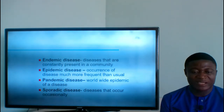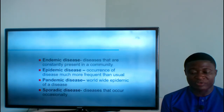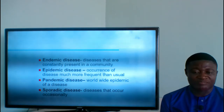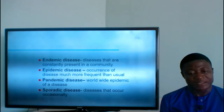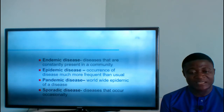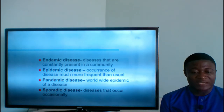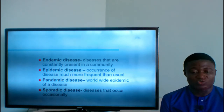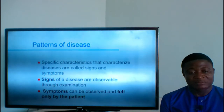Pandemic disease: this refers to the worldwide spread of a disease. A disease that has spread worldwide is what we refer to as a pandemic. The latest example is the coronavirus. Sporadic disease: this is a disease that occurs occasionally, one at a time.